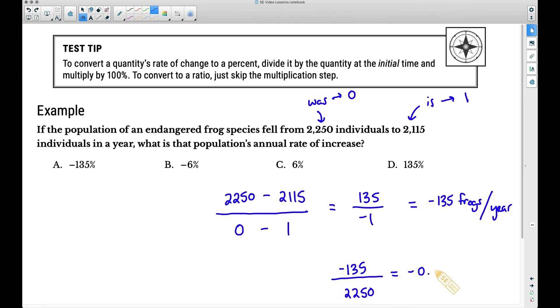And now you can multiply by 100 or simply remember to convert a decimal to a percent. We move the decimal two places to the right, so we have a negative 6% rate of increase. The rate of increase cannot be a positive number because the population fell. Very tricky question, like I mentioned, right before we started working this one out.